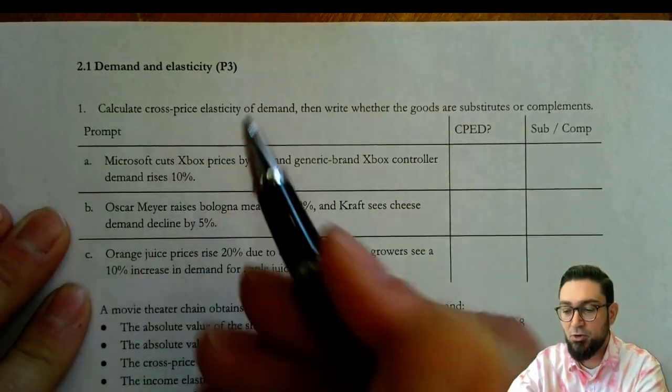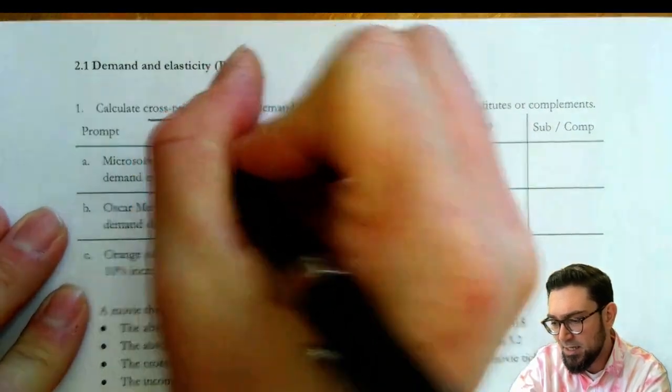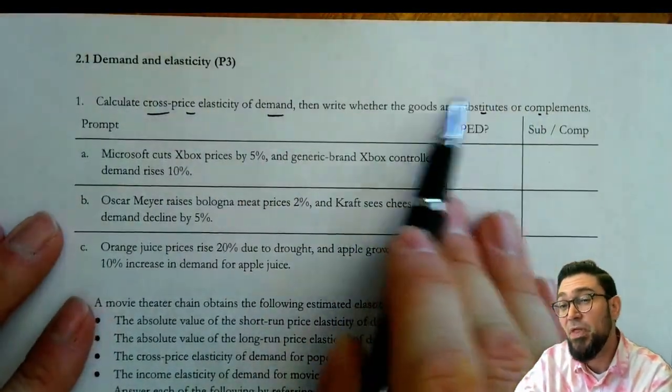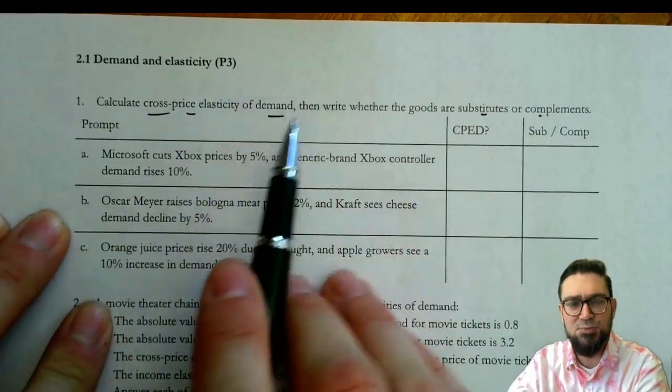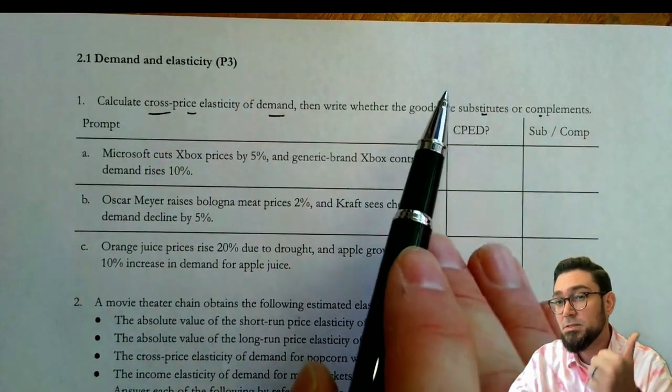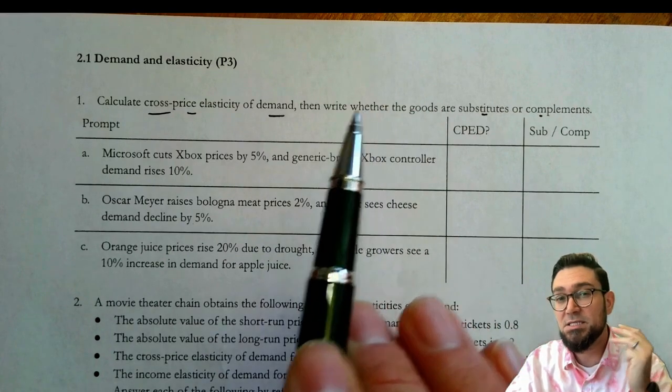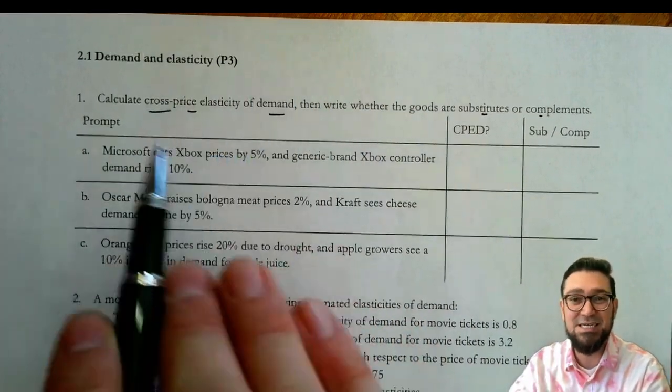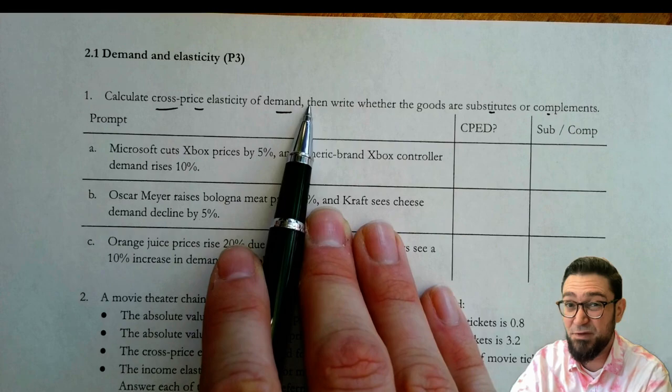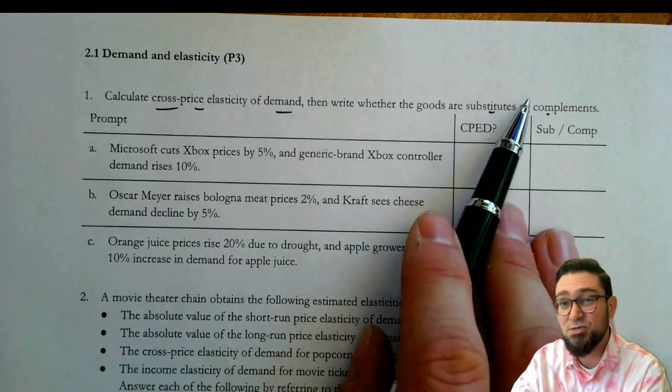Our first section here says calculate cross-price elasticity of demand, then write whether they're substitutes or complements. Now I'll tell you on an exam, sometimes they'll actually say calculate the cross-price elasticity of demand, and then tell us whether the goods are substitutes, complements, inferior, or normal. And sometimes what they're doing there is actually just testing, do you know that cross-price elasticity of demand doesn't tell you that they're normal or inferior? You could only say substitutes and complements.